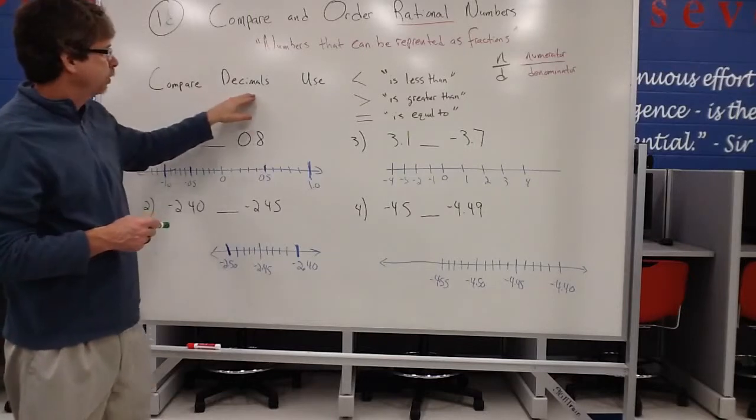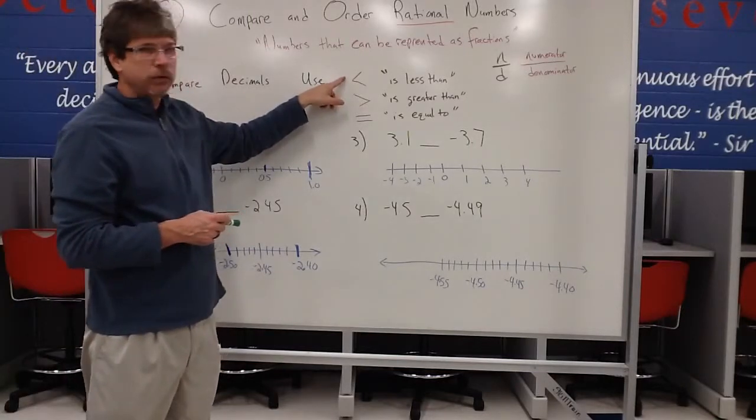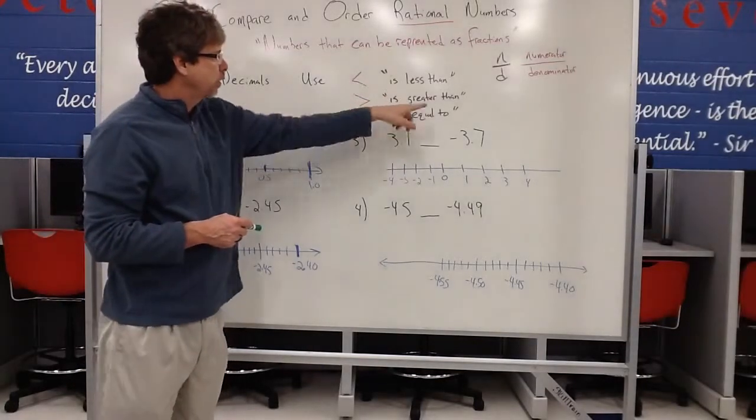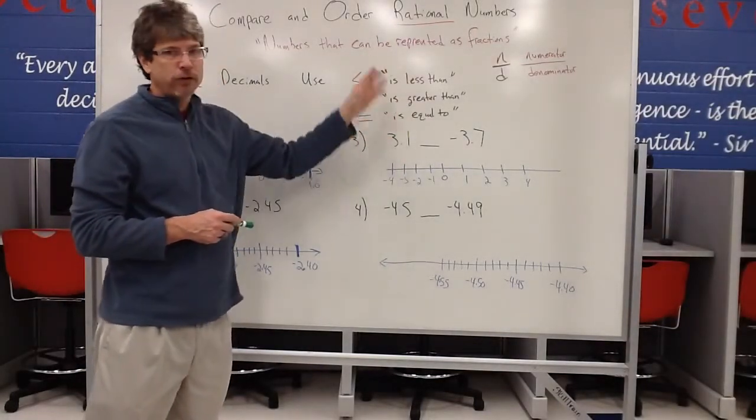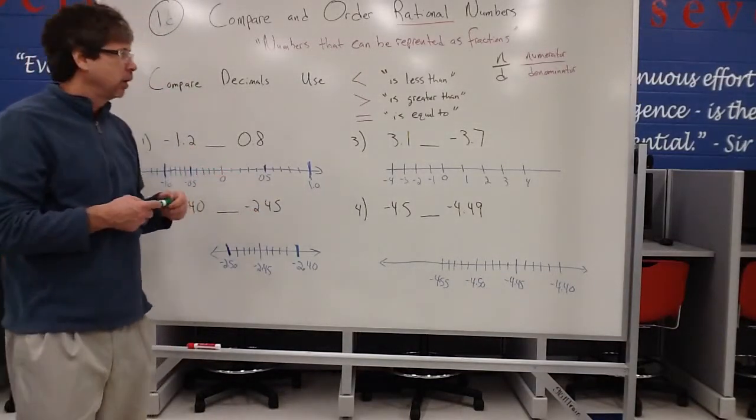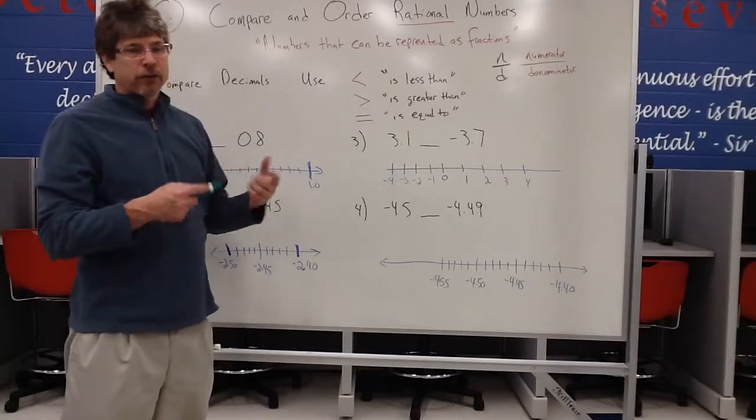So we're going to compare decimals, and we're going to use these three symbols: less than, greater than, equal to. Is less than, is greater than, is equal to is the more formal way of saying it. A lot of us just simply say less than, greater than, or equal to. But that verb is kind of important when you do math sentences.